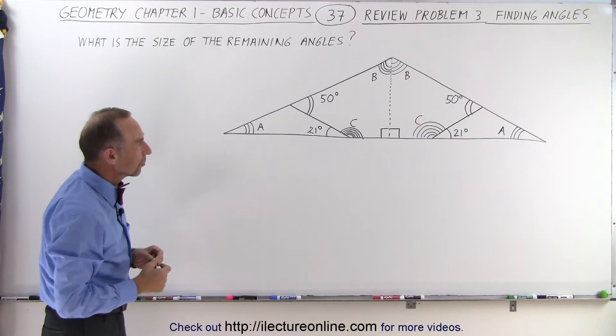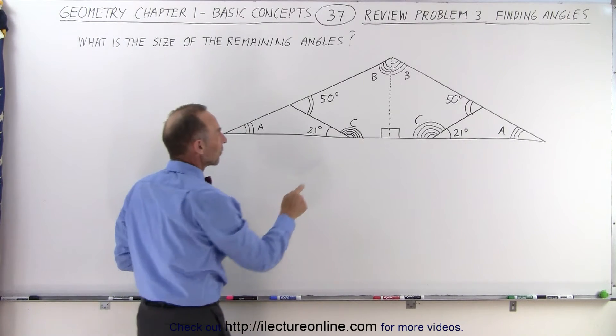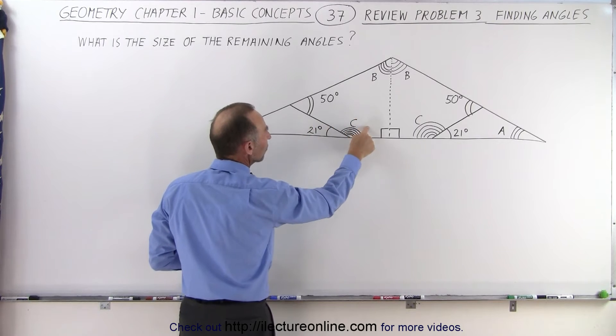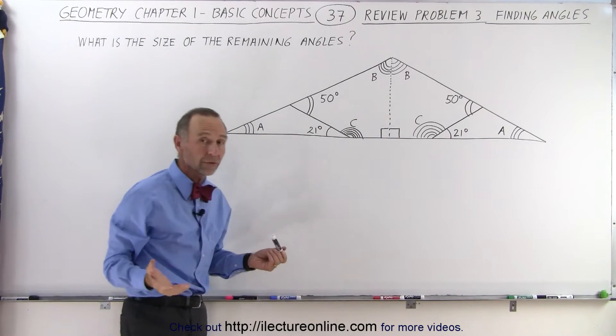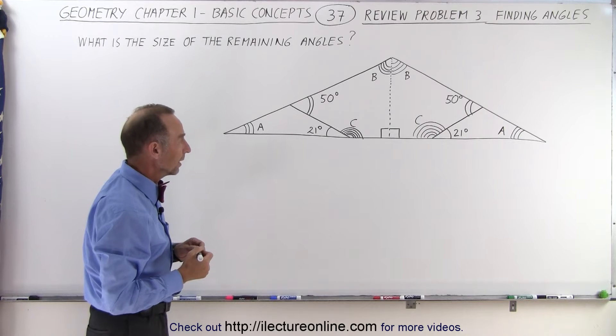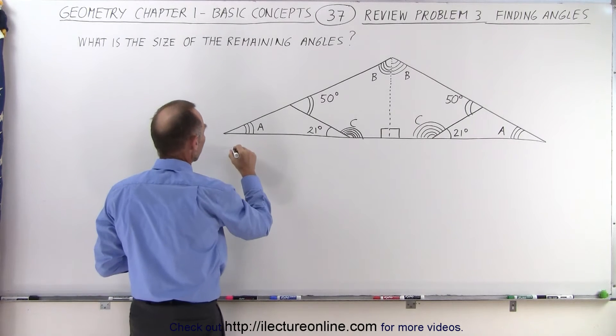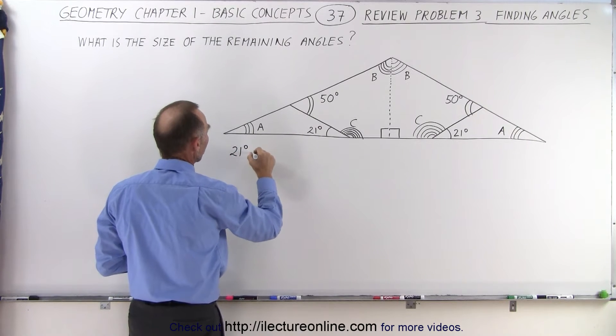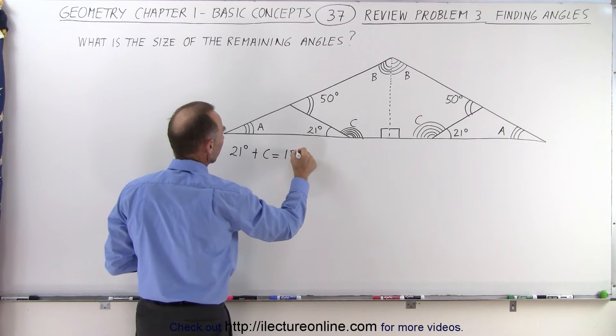Let's start with the angle C, because you can see that 21 degrees and C are supplementary angles. That means that they should add up to 180 degrees. So we can say that 21 degrees plus C is equal to 180 degrees.